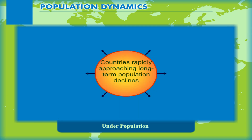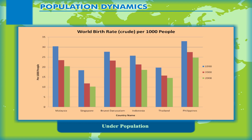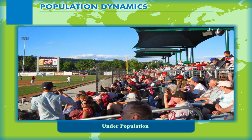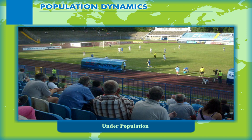Countries rapidly approaching long-term population declines but currently still growing, albeit slowly, include Spain, Cuba, Uruguay, Denmark, Finland and Austria. Russia is also facing long-term population decline, although for the moment there has been a reversal due to an increased birth rate. Many nations in Western Europe and the EU as a whole would have declining populations if not for international immigration. The total population of Europe, including Russia, peaked around the year 2000 and has been falling since 2004.